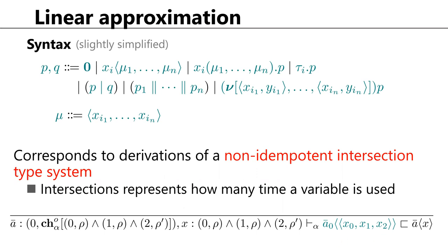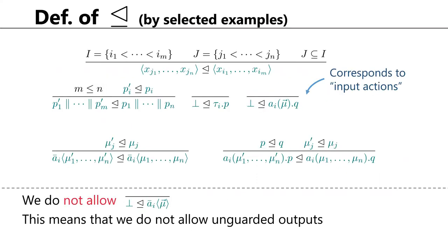Type plays an important role in our proof of the main theorem. The refinement relation is inductively defined. For example, one rule says we can enlarge a list, another says we can add more parallel compositions to the approximation of a replicated process. Notably, we do not allow replacing undefined with an output action — this reflects the idea that we do not allow unguarded outputs — though outputs are permitted if they are guarded, e.g., inside some guarded expression.